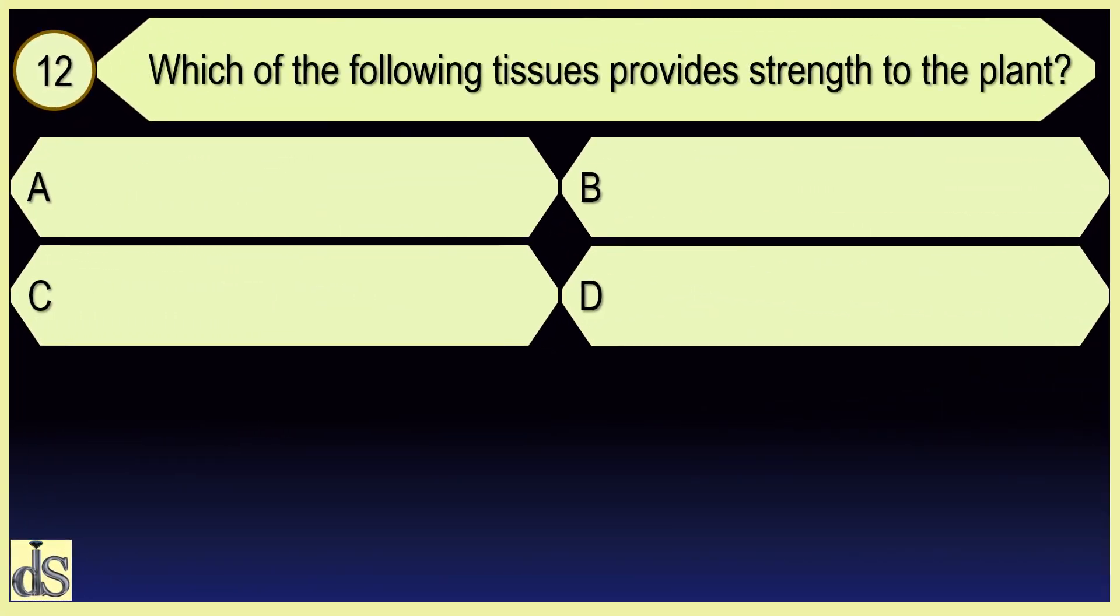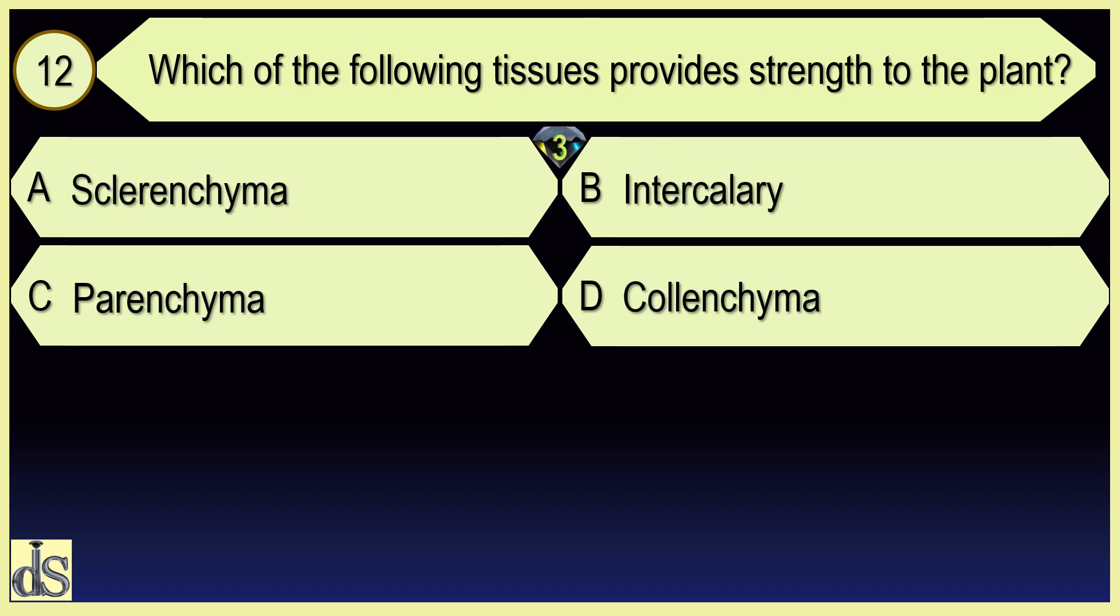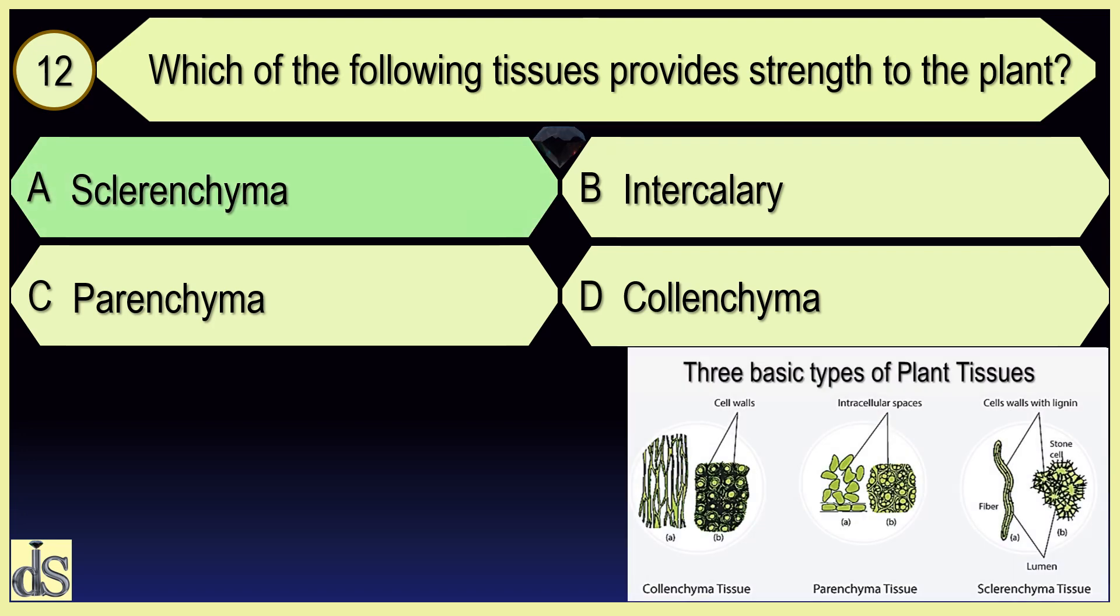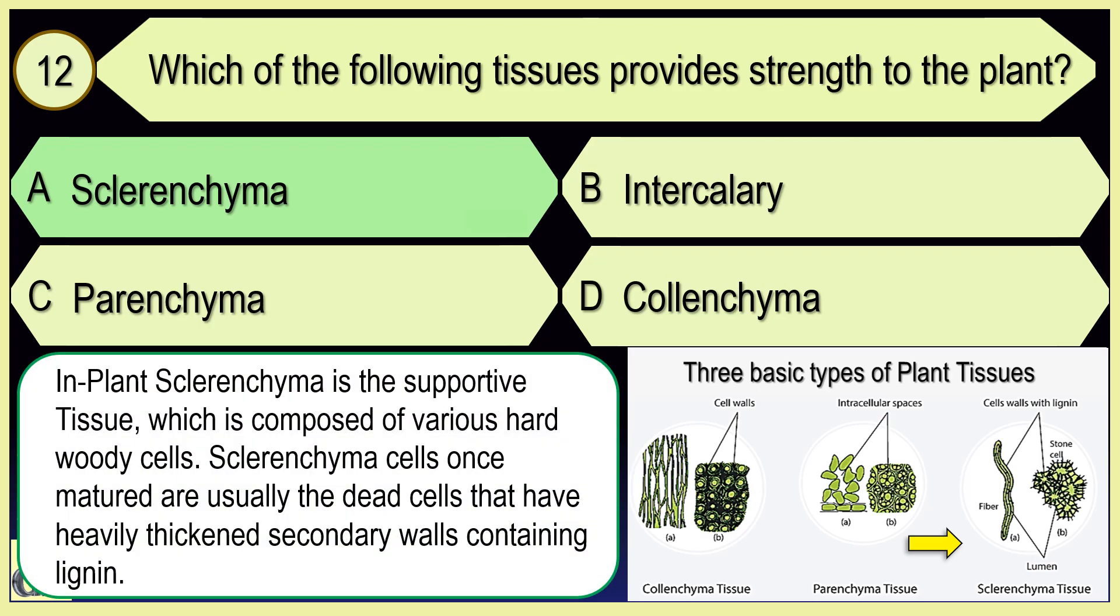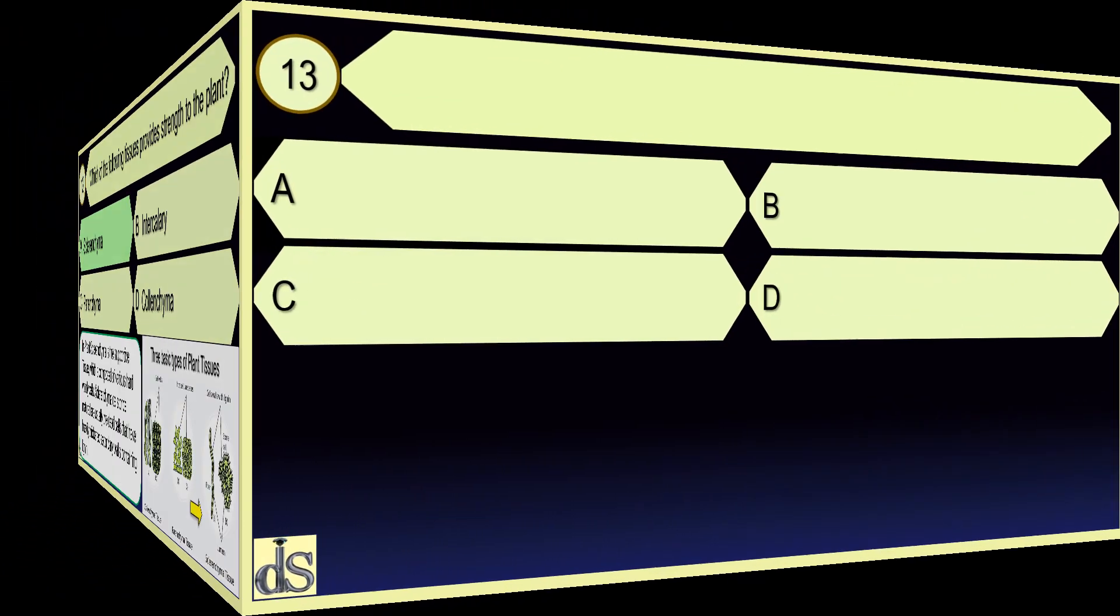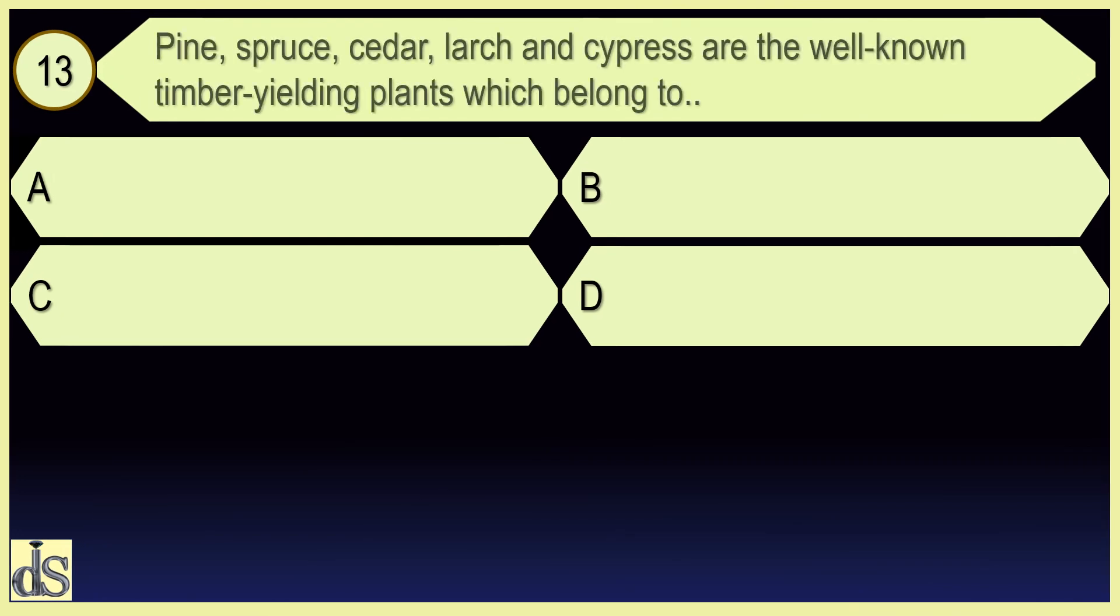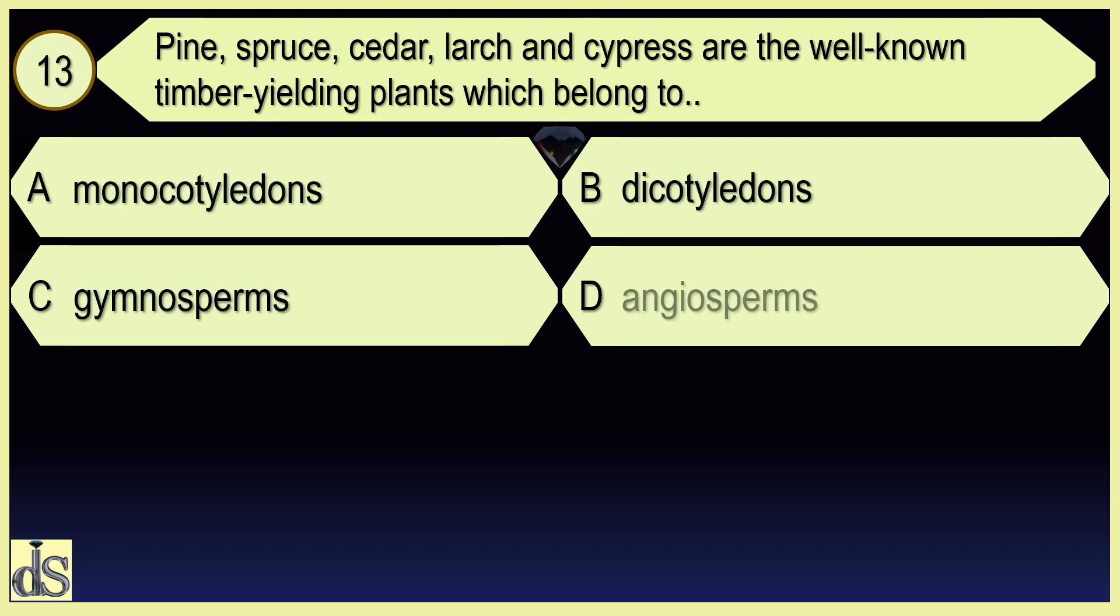Which of the following tissue provides strength to the plant? Clarenchyma. Pine, spruce, cedar, larch and cypress are the well-known timber yielding plants which belong to gymnosperms.